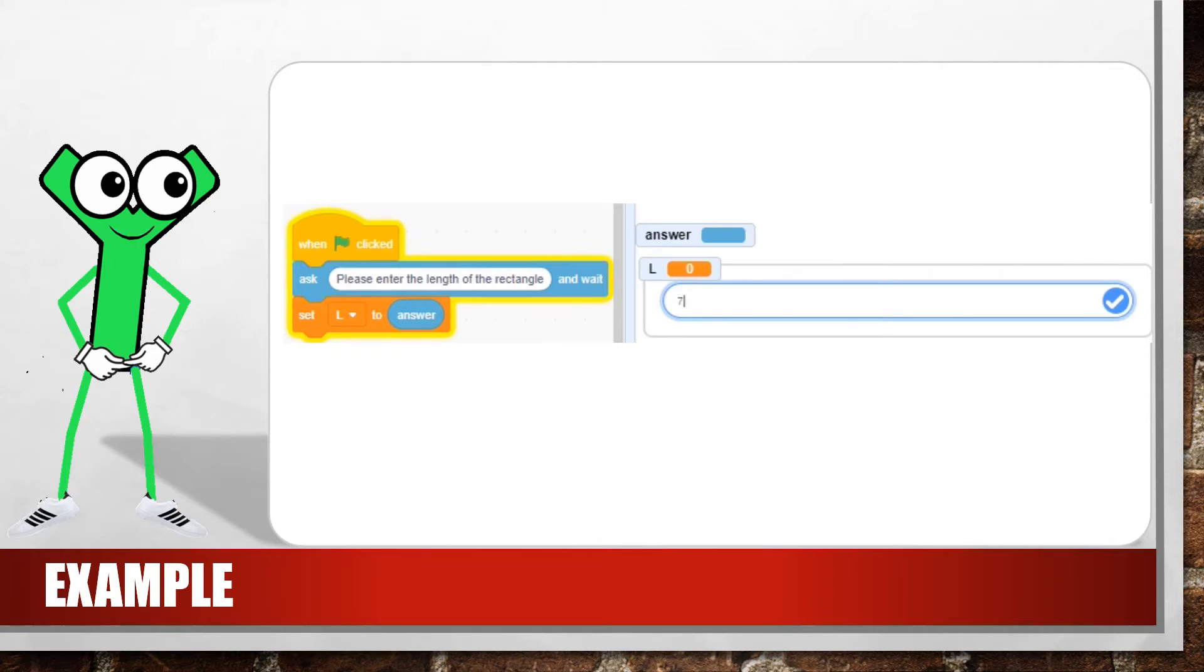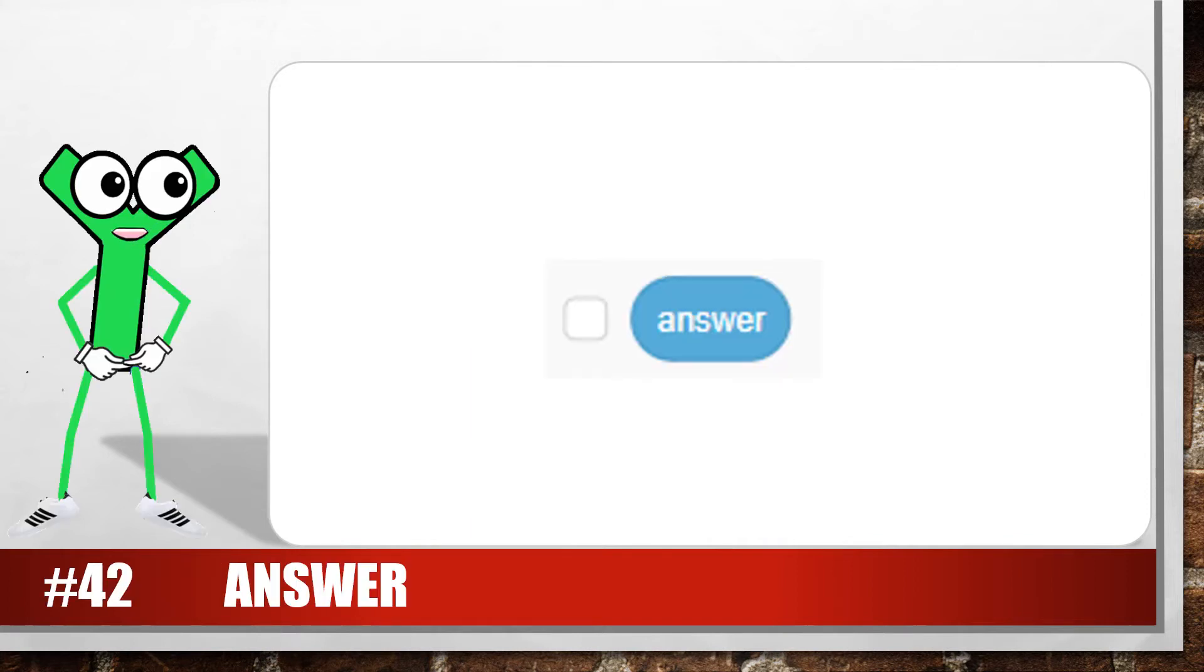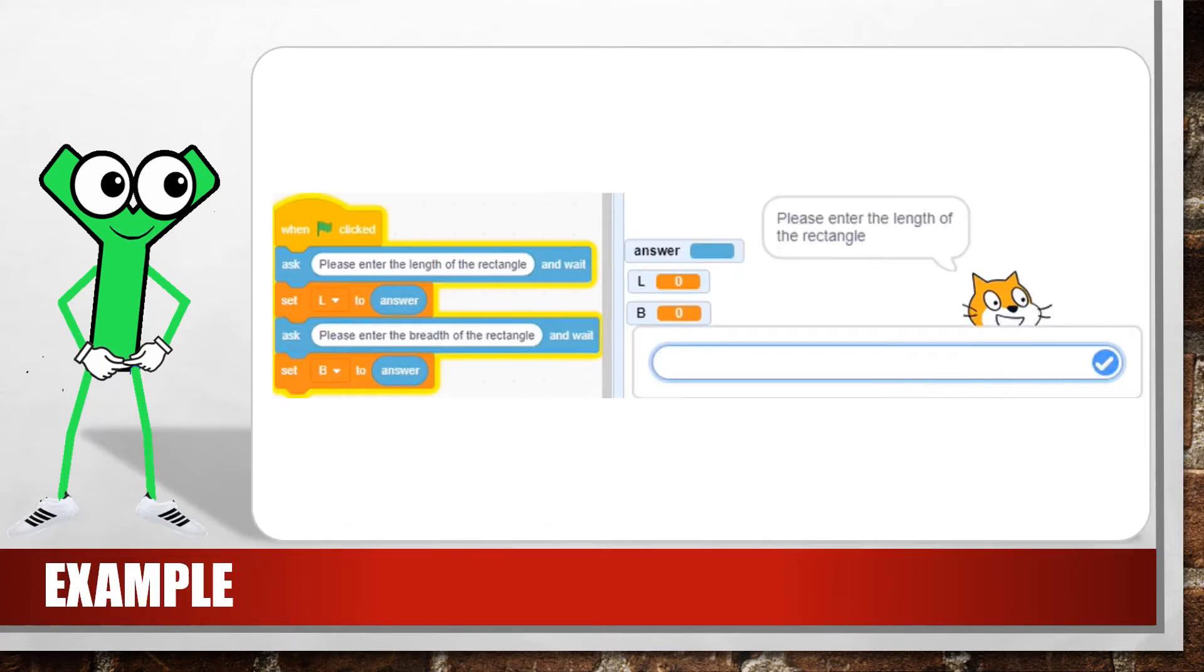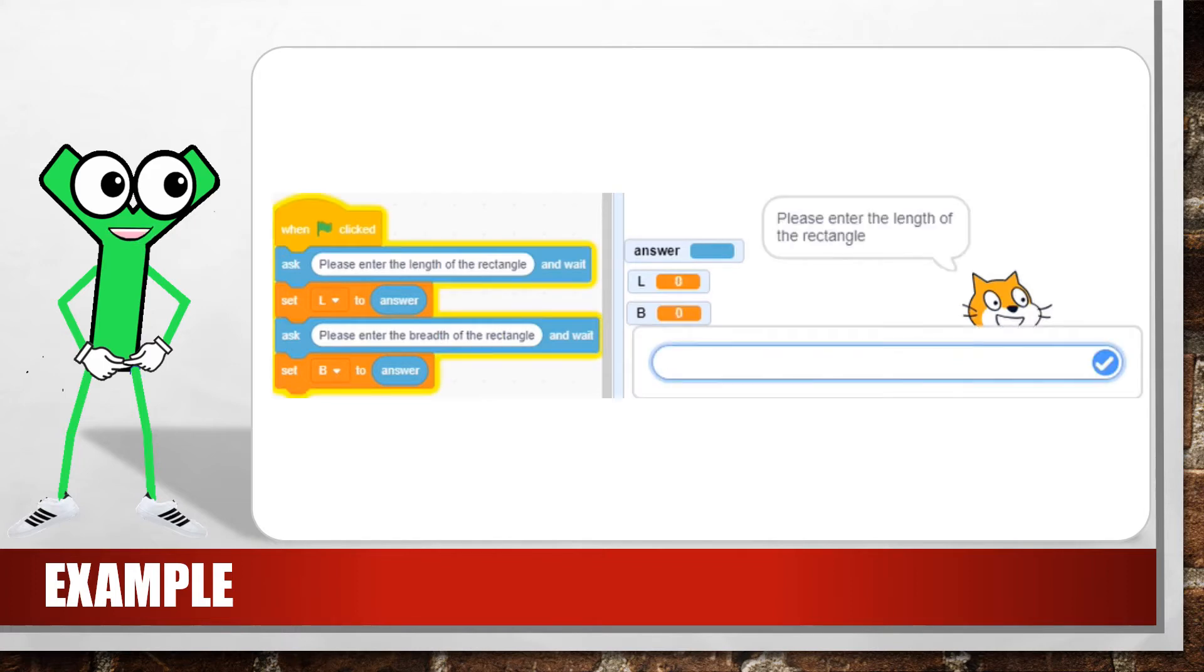Note how the value in the variable is replaced or overwritten every time you type in a new value. This light blue block stores the most recent word or number that was received with the ask and wait block. This block's value can be displayed on stage by selecting the box to the left of the block. The word or number you type is stored in the answer block and should usually be assigned to a variable as each new answer you enter in the ask block overwrites the previous value. Try it now.